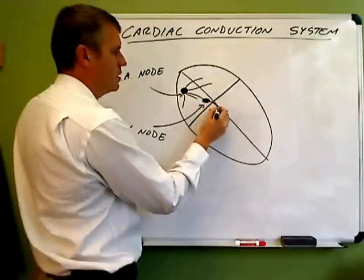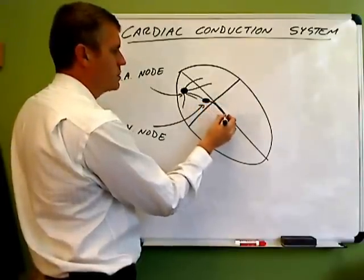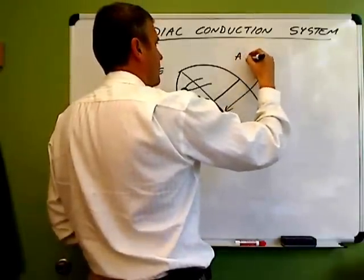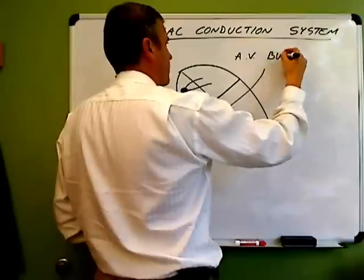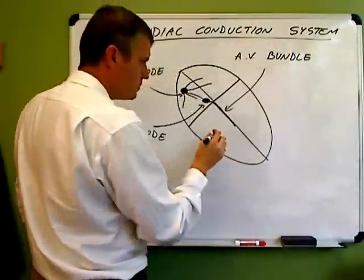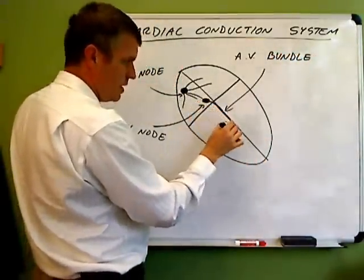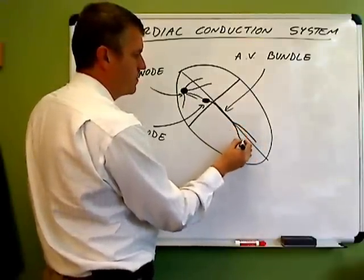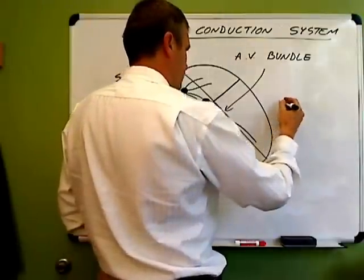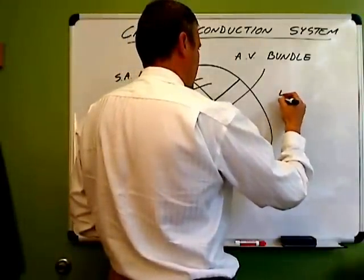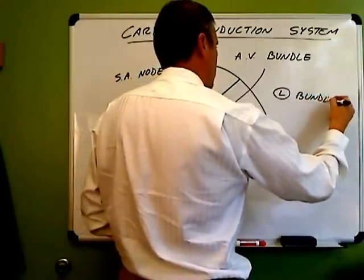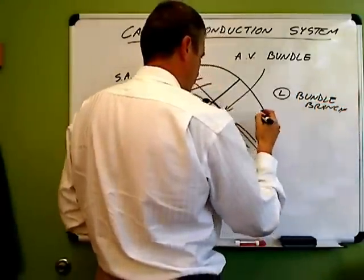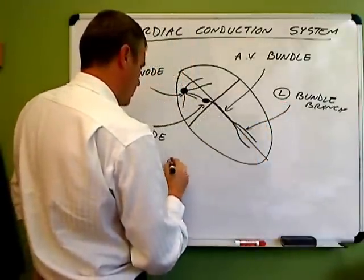The next thing on our route here is called the bundle of Hiss or the AV bundle. The signal screams down that AV bundle and then there's a branching so that we have the left bundle branch and the right bundle branch.